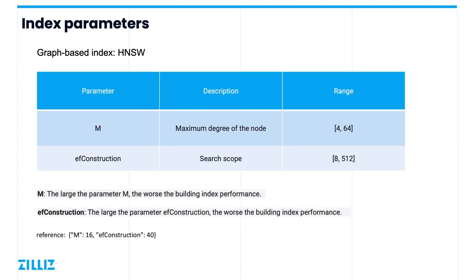The next index type is also a graph-based index. Unlike RNSG, HNSW creates a multi-layer navigation structure. The upper levels of the graph are more sparse and the distance between nodes is more distant. The lower levels are more dense and the distance between nodes is closer. When searching, we start from the top layer, find the nearest node in that layer, and then go to the next layer, quickly approaching the target location. HNSW limits the maximum degree of nodes on each layer to M — the larger M is, the longer it takes to build the index. EF_construction specifies the search range when building the index, that is, how many closest nodes to find for the current point being indexed. The larger EF_construction is, the longer the index building time will be. The larger these two parameters, the better the quality of the constructed graph index and the higher the subsequent recall rate, but the longer it takes to build the index.